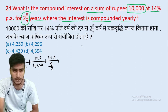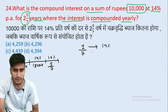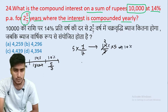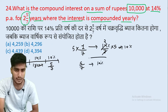For 1 year the rate is 14%. So for 1/7 year, divide by 7, then multiply by 5. So for 5/7 year the rate of interest will be 10%.